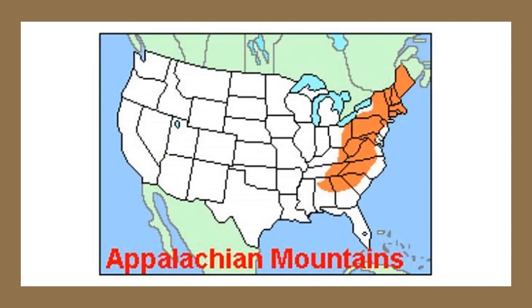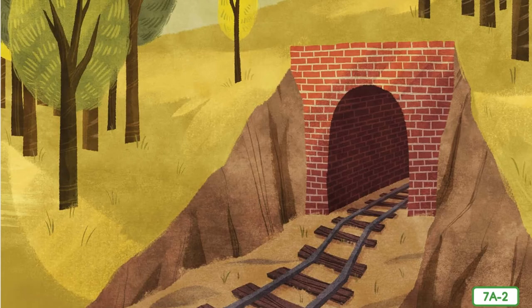But some mountains were just too tall to go over and too big to go around. Reach up your arms and say too tall, then stretch them wide and say too big. In those cases, the only solution was to dig a tunnel right through the mountain. Digging tunnels was dangerous work. The tunnels were dark and poorly ventilated — barely enough fresh air for workers to breathe. Many workers were killed by sudden cave-ins when large pieces of rock fell into the tunnel.